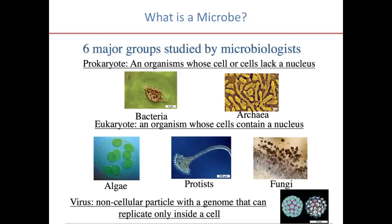A eukaryote is an organism whose cell contains a nucleus. There are eukaryotic organisms that are considered microbes — those are algae, protists, and fungi. The third category under which the six groups fall are viruses, which are non-cellular particles with a genome that can only replicate inside of a cell.